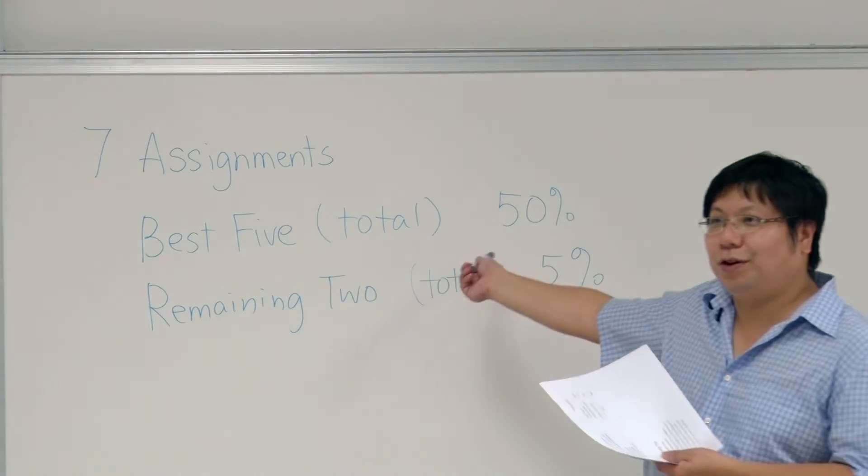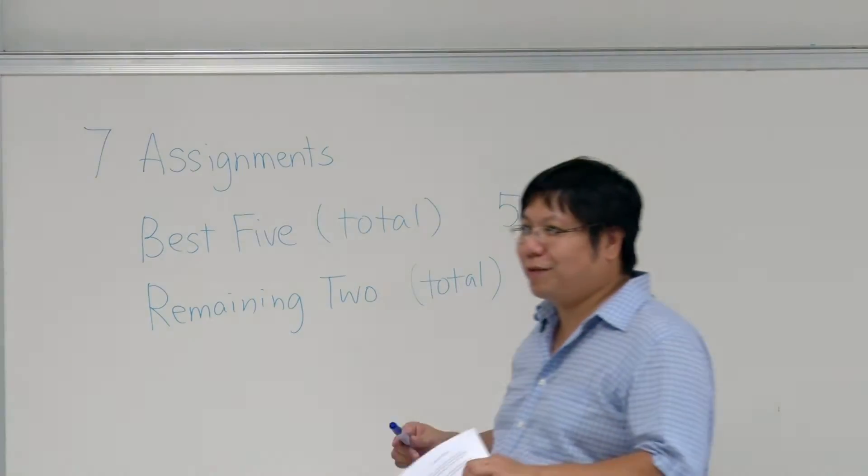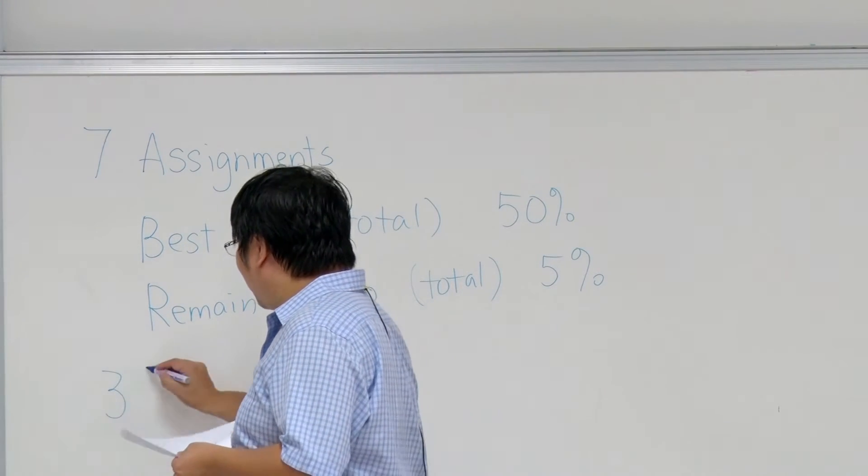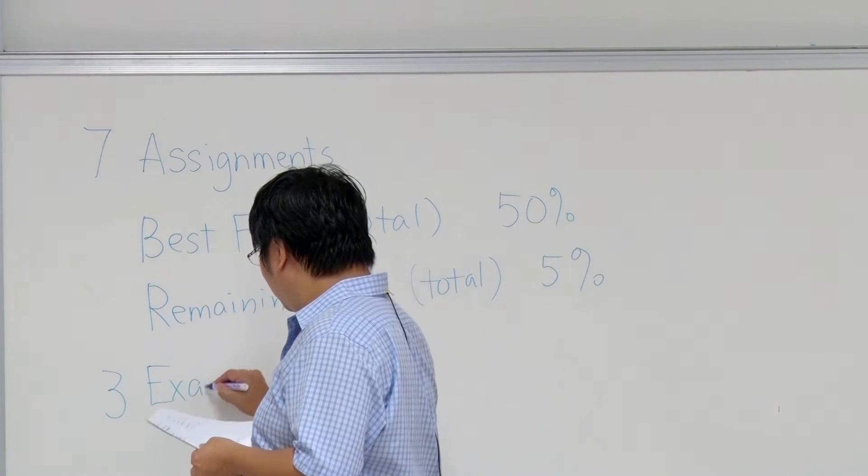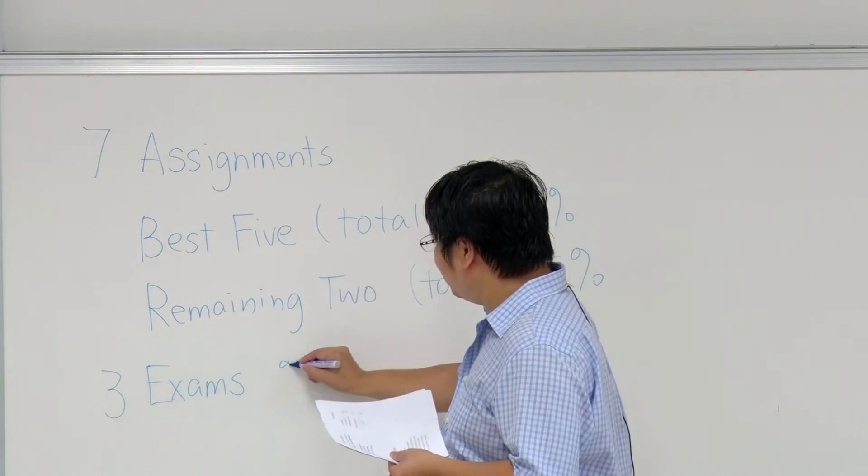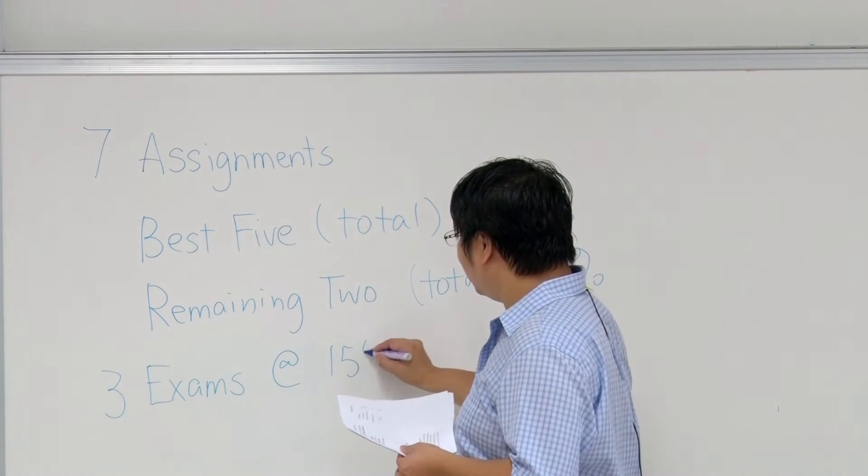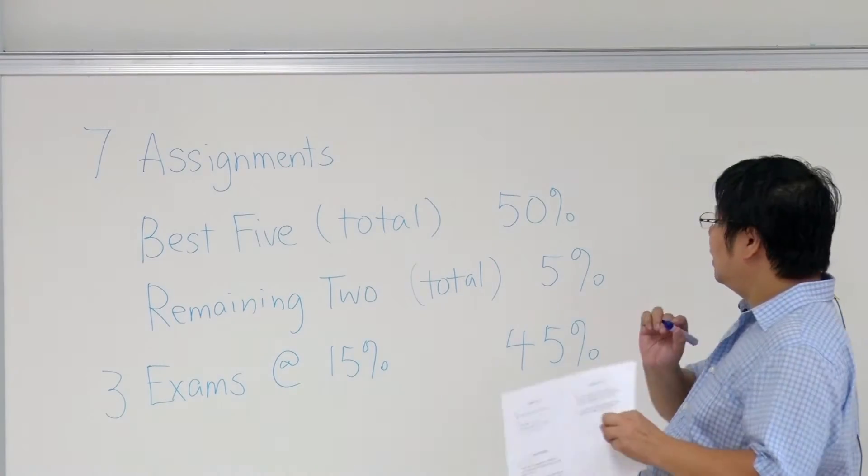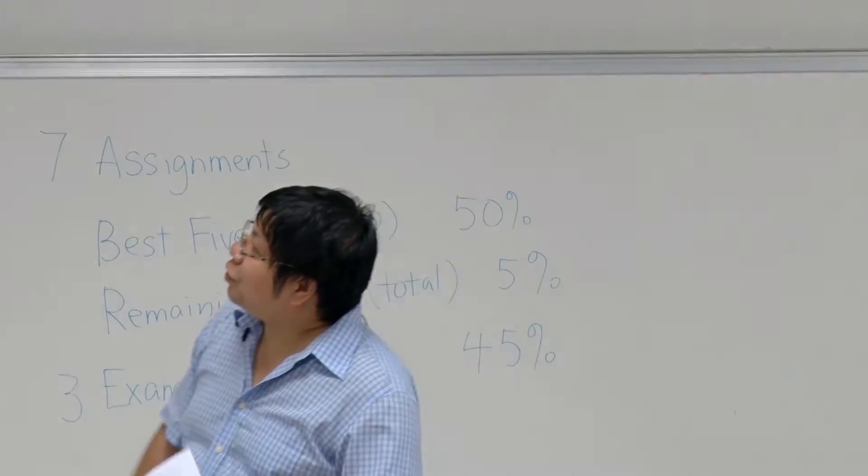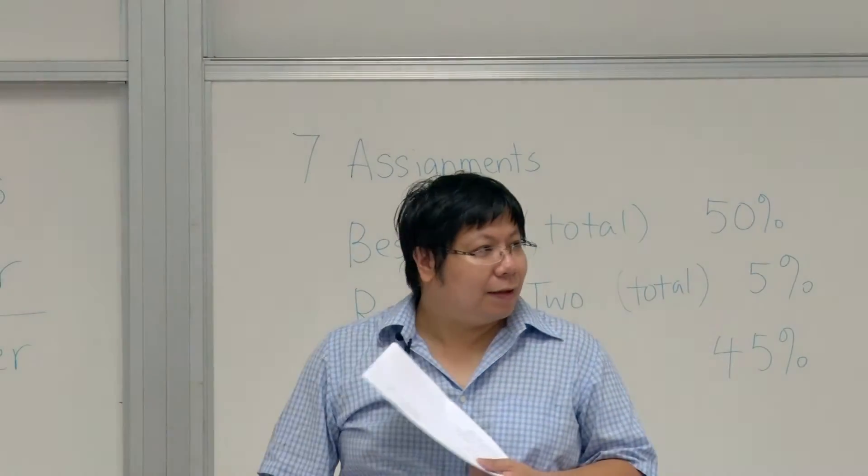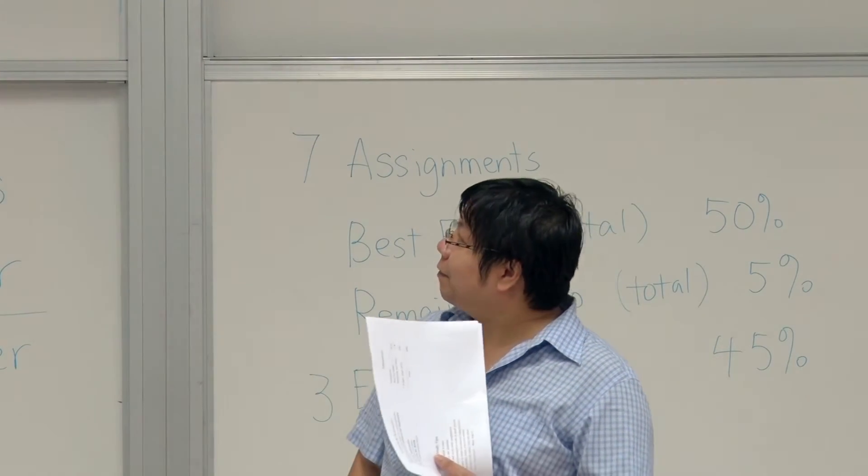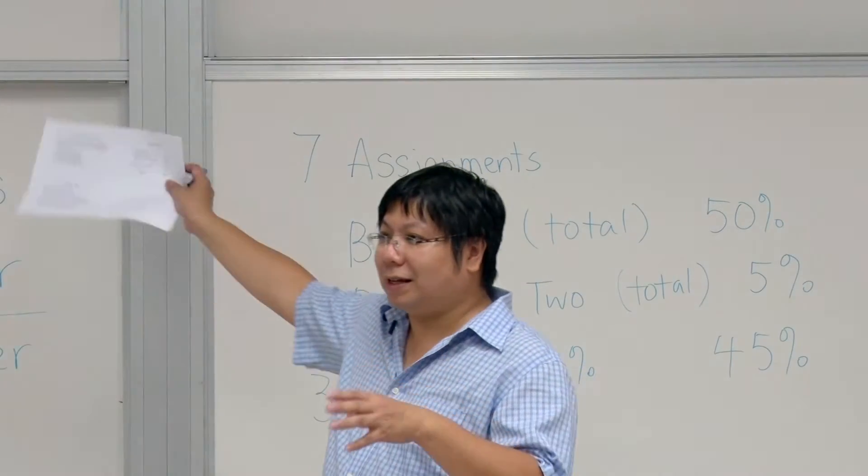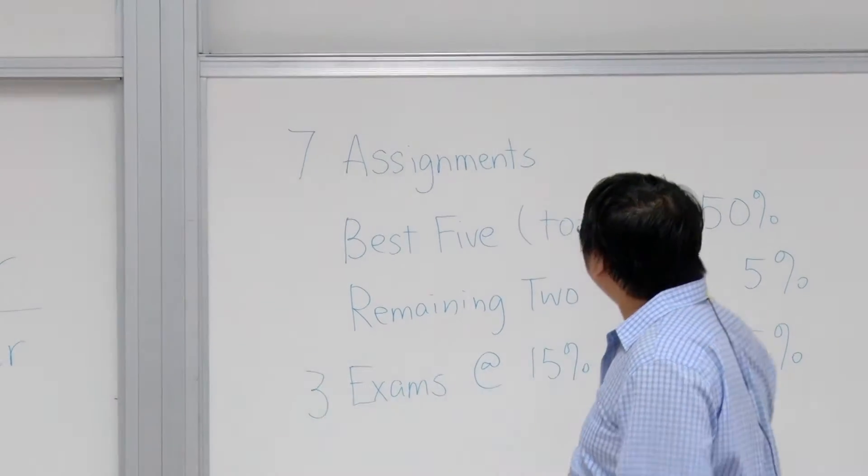If you score perfectly for the first five, then you don't need to do anything for the last one. And we will have three exams, each of them is 15%, so in total, it is 45%. Roughly speaking, the first two topics will be in the first exam, three and four will be in the second exam, five and six will be in the last exam. And seven, we don't have time. So this is it.